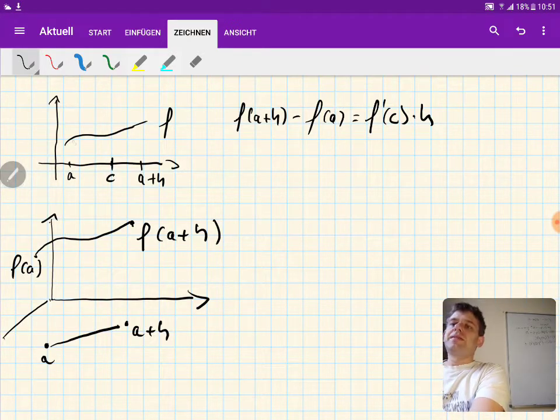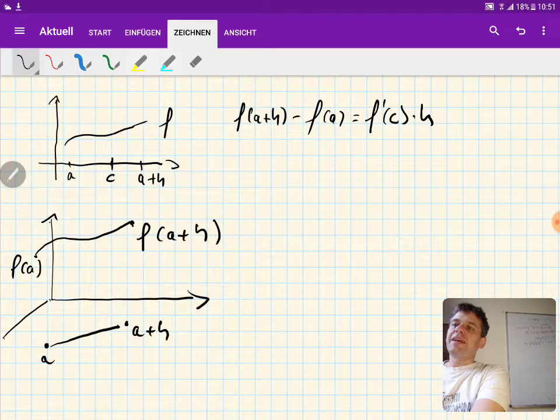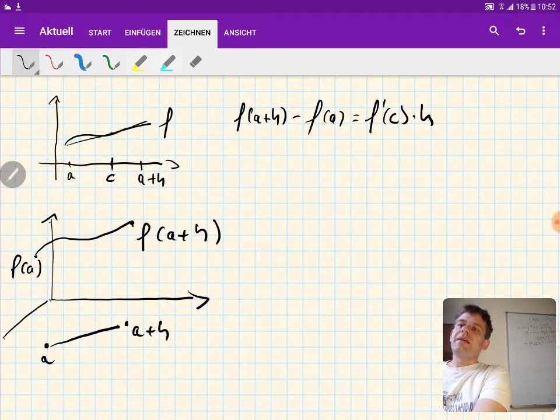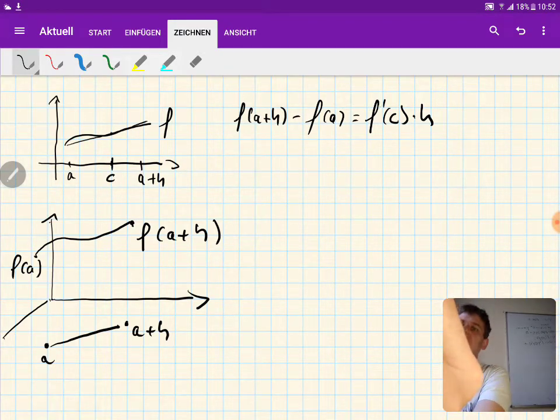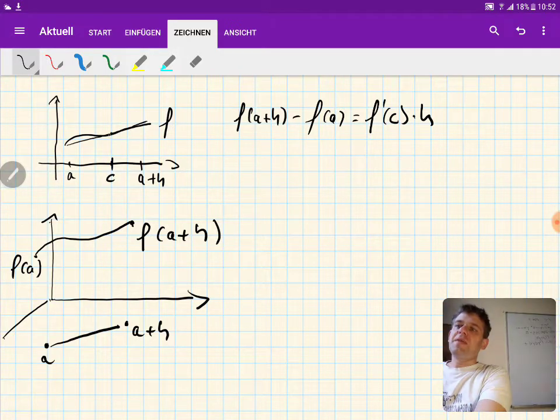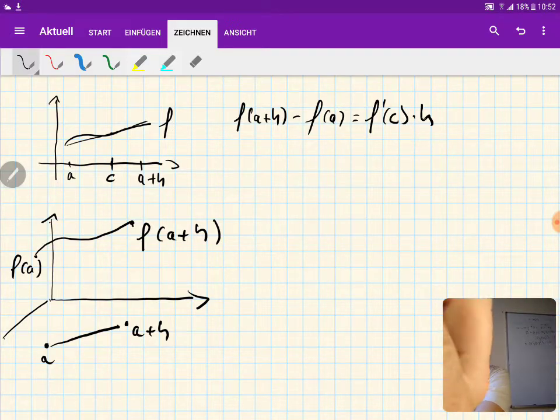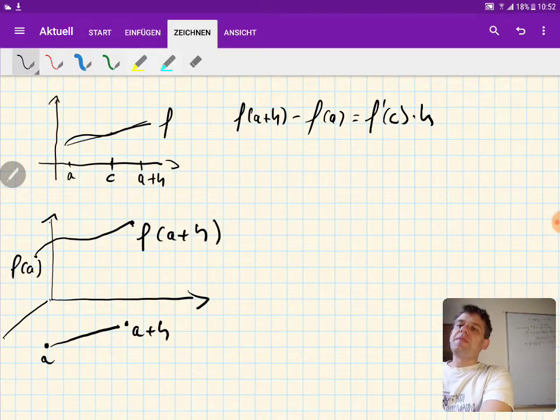So to do this very graphically, you could say that you can always fit a tangent in our picture. It would be at this point such that this tangent has a slope which is equal to the derivative in this point c, and such that you get from a to a plus h if you move h along this tangent.